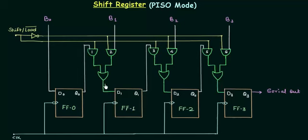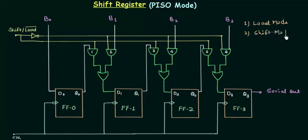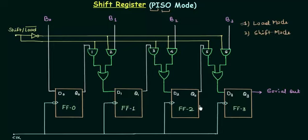There are two modes in which this circuit can work: the first is the load mode and the second is the shift mode. The heading says parallel input serial output mode, so we have two aims. The first is parallel input and the second is serial output. The first aim is achieved by the load mode, in which we load the data into each flip-flop simultaneously.